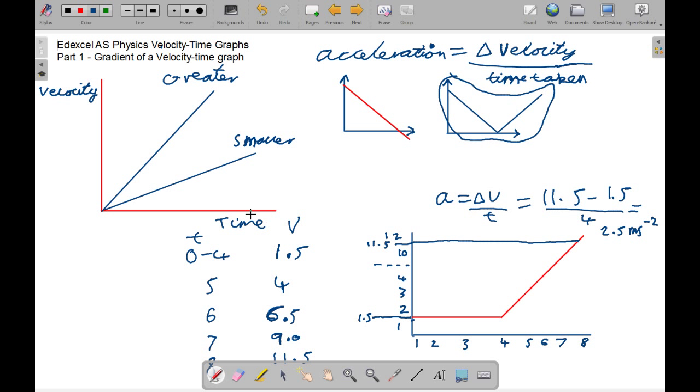Now we'll look at this experimental one. So this is my set of velocities and my times. In this sketch graph, we have a constant velocity at 1.5, and then it increases by 2.5 meters per second every second after that. So we can calculate the gradient again by using acceleration equals the change in velocity over the time taken. And this comes to 11.5, which is the highest velocity you can have, and 1.5 is the lowest. And then putting that over 4, which is the time taken, 4 seconds - 0 to 4 to 8 is 4 seconds - that makes 2.5 meters per second squared.